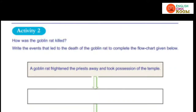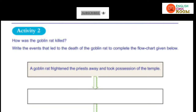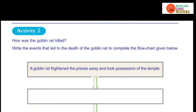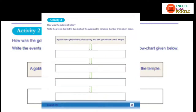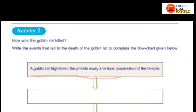Now look at Activity Two: How was the Goblin rat killed? This is the climax of the story. Write down the events that led to the death of the Goblin rat and complete the flow chart given below. The first step is already given: the Goblin rat frightened the priests away and took possession of the temple.